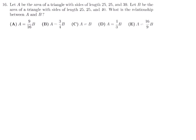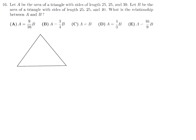Number 16: Let A be the area of a triangle with sides 25, 25, 30 and B be the area of a triangle with sides 25, 25, 40. Both triangles are isosceles. Draw a perpendicular from the apex to the base in each to find the heights.